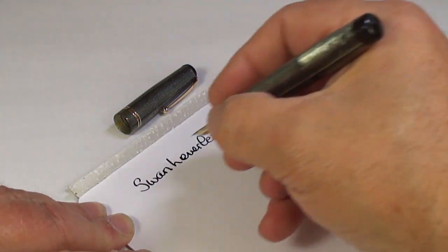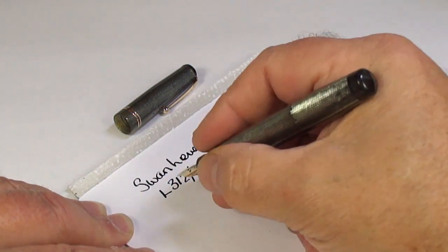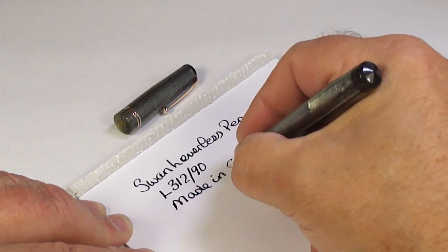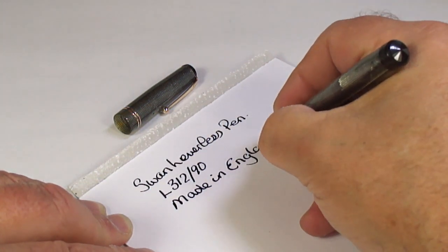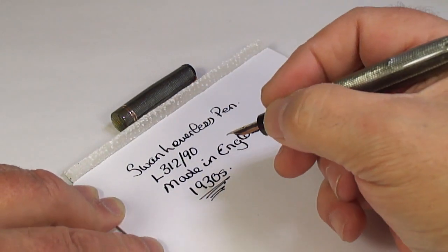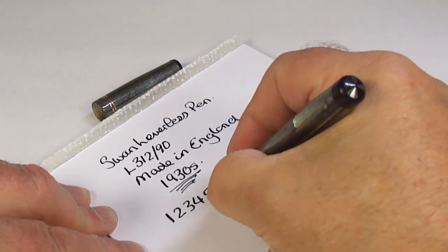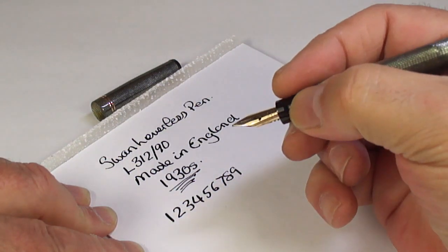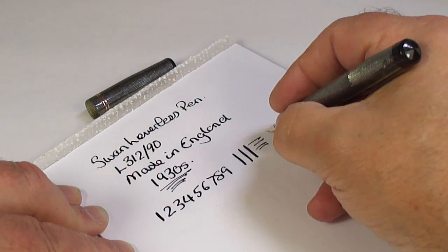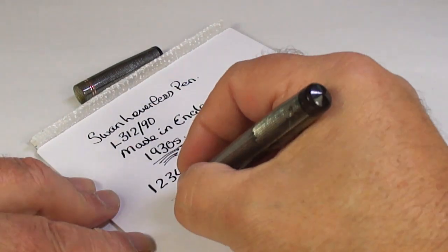A Swan leverless pen, L31290, made in England, circa 1930s. It's actually writing absolutely lovely. We've got a Swan nib. Does it have any flex? By looking at that, I would say it does have a little bit of flex.